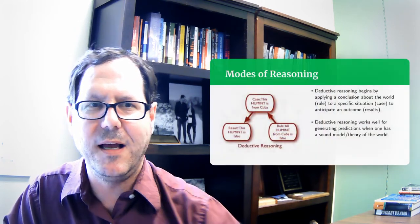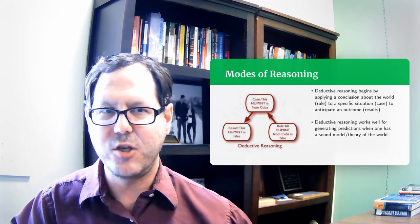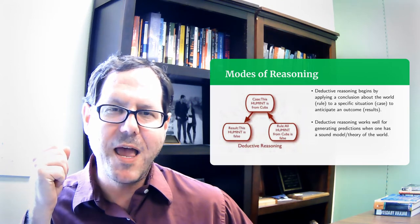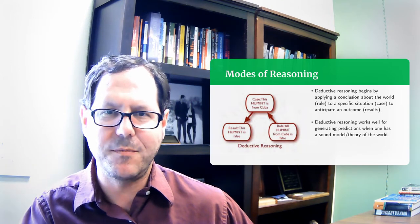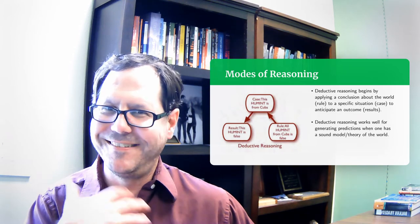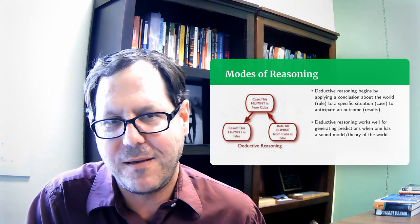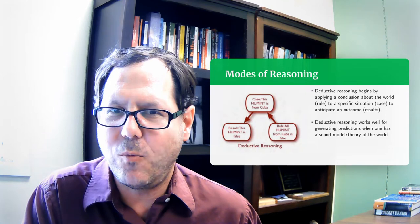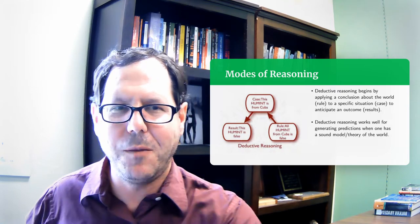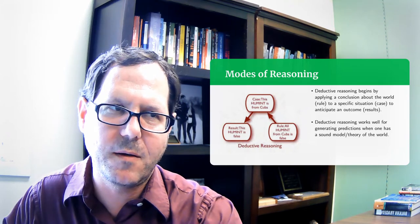The second mode of reasoning is the deductive mode, in which we're going from a rule. I have a belief about human intelligence from Cuba being false, and I'm applying it to a particular case. Here we have some human intelligence from Cuba. What do I know about that based on this rule that I have? Well, I'm going to conclude that this human intelligence is false because I have this rule that tells me if it's coming from Cuba, it's probably false. Again, this is a widely accepted and valid form of reasoning. People apply it pretty consistently, particularly when making forecasts or trying to extend past patterns into the future.